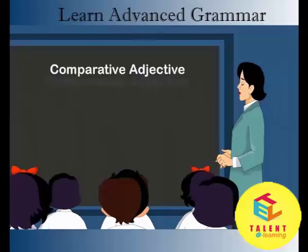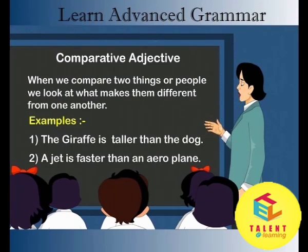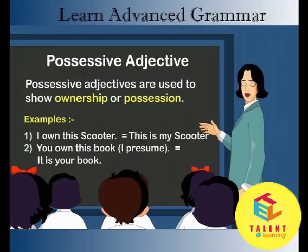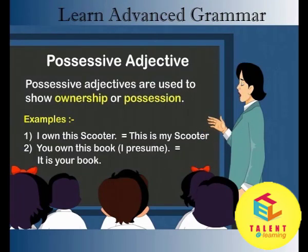Comparative adjective. When we compare two things or people, we look at what makes them different from one another. Examples: 1. The giraffe is taller than the dog. 2. A jet is faster than an aeroplane. Possessive adjective. Possessive adjectives are used to show ownership or possession. Examples: 1. I own this scooter. This is my scooter. 2. You own this book, I presume. It is your book.